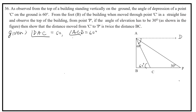Angle APB is 30 degrees. What is to prove? CP is equal to 2 BC.